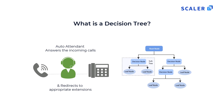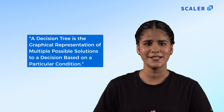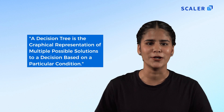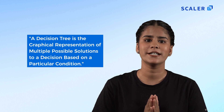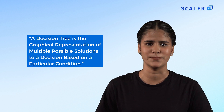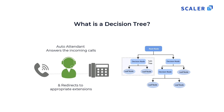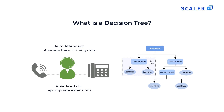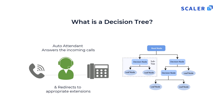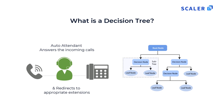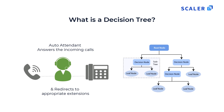What is a decision tree? In technical terms, a decision tree is a graphical representation of multiple possible solutions to a decision based on a particular condition. You might wonder why this algorithm is called a decision tree. The machine learning algorithm is known as the decision tree because it starts with the root and the branches are all possible solutions — just like a tree starts from a root and has multiple branches.